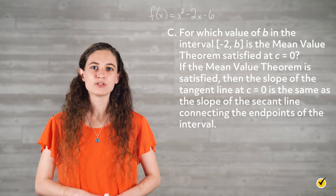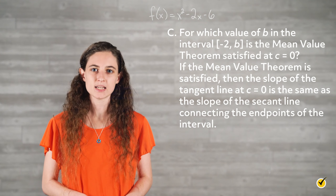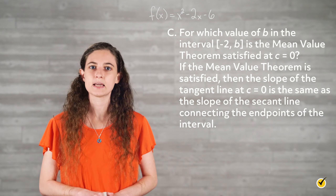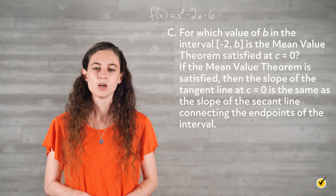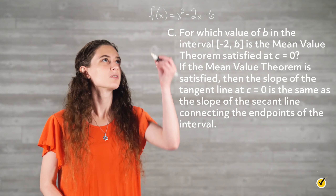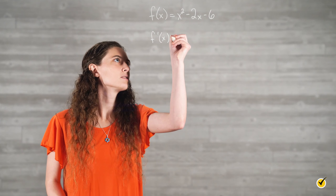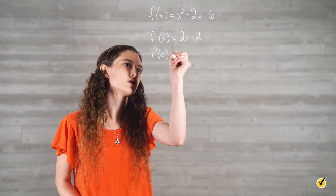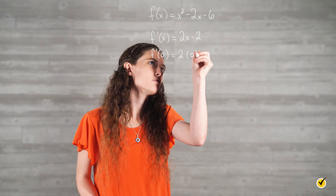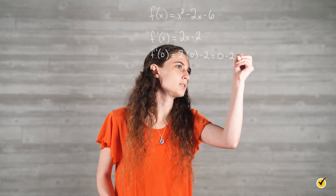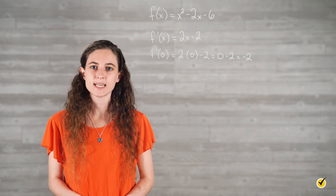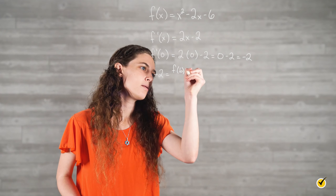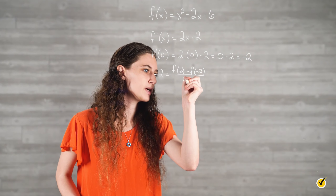Part C: For which value of b in the closed interval negative 2 to b is the mean value theorem satisfied at c equals 0? If the mean value theorem is satisfied, the slope of the tangent line at c equals 0 is the same as the slope of the secant line connecting the endpoints. The derivative is f prime of x equals 2x minus 2. Plugging in 0: 2 times 0 minus 2 equals negative 2. So the slope of the tangent line equals negative 2. We set negative 2 equal to f of b minus f of negative 2, over b minus negative 2.